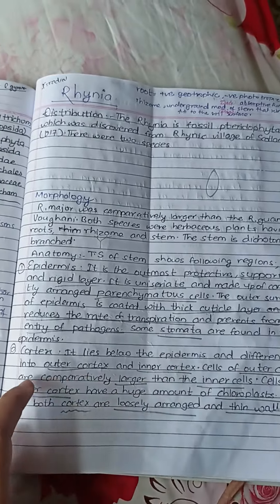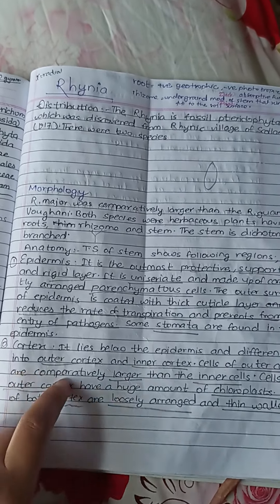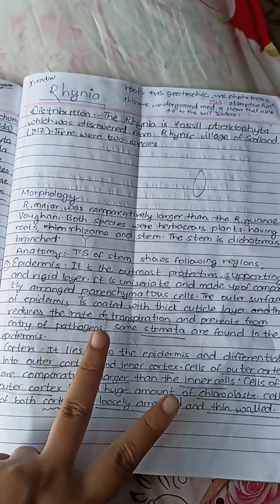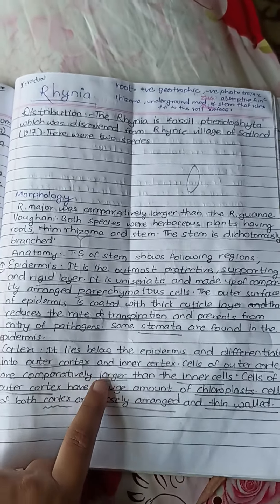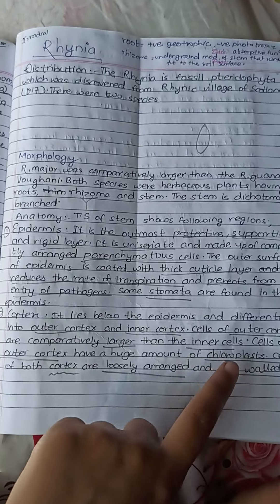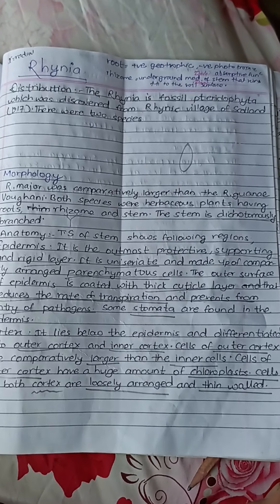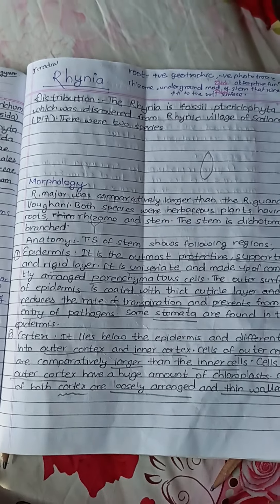So we can do it in epidermis. We can do it in the cortex. Then the cortex is divided into two cortex. The outer cortex is comparatively larger and the outer cortex has a large amount of chloroplast. The cells are thin walled.